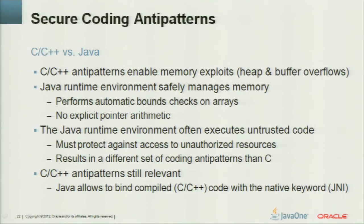Anti-patterns in C and C++: these languages enable memory exploits like heap and buffer overflow because of native code running directly on the processor with no sandbox. Java is different — it uses safe memory management, performs automatic bounds checks, and has no explicit pointer arithmetic. Java often executes untrusted code, so you must protect access to resources. This results in a different set of anti-patterns than in C, though JNI code inherits all those C and C++ problems.